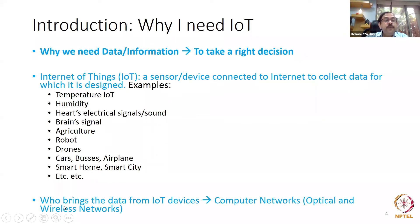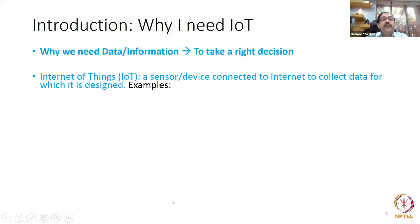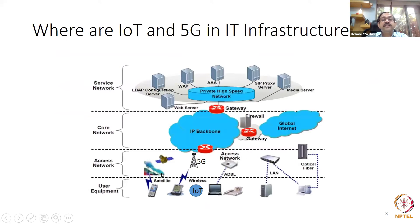Who brings the data from IoT devices? Computer networks — optical and wireless networks — bring the data collected by the IoT devices to the data center. Our role is those networks that bring data from your IoT devices to the data center. There are many types: access network, core network, service network — these networks carry the data.